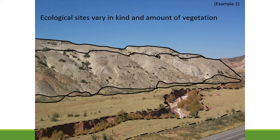Here's an example of ecological sites varying in the kind and amount of vegetation. In this picture you've got really clay-type badland soils in the background — if you graze those, they'll be affected differently than the terrace above the stream. That flat area will be affected differently by fire. Down in the stream there's a different kind of vegetation. On the bench land up by the road there's yet another different kind of vegetation. All of those are different ecological sites.